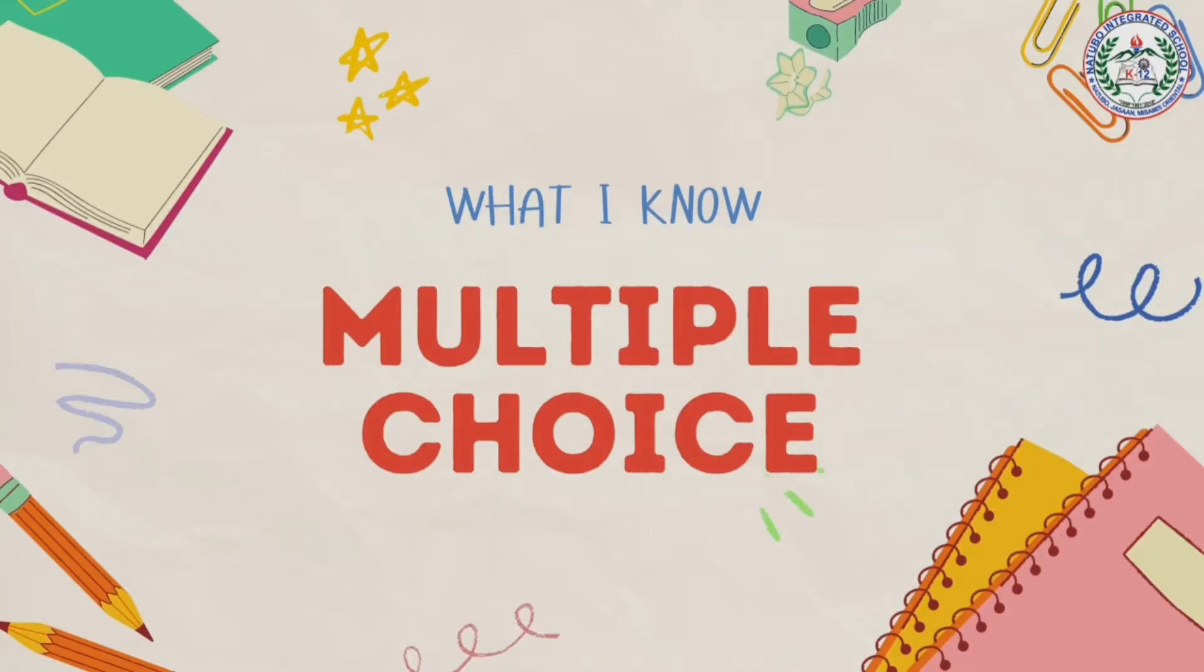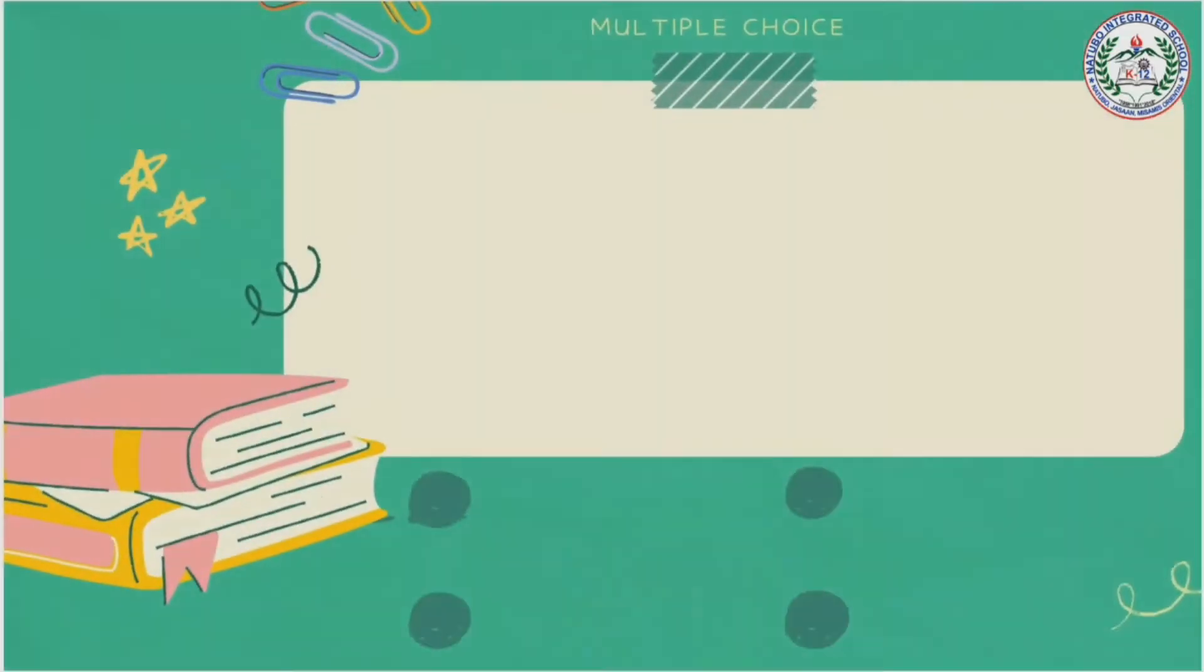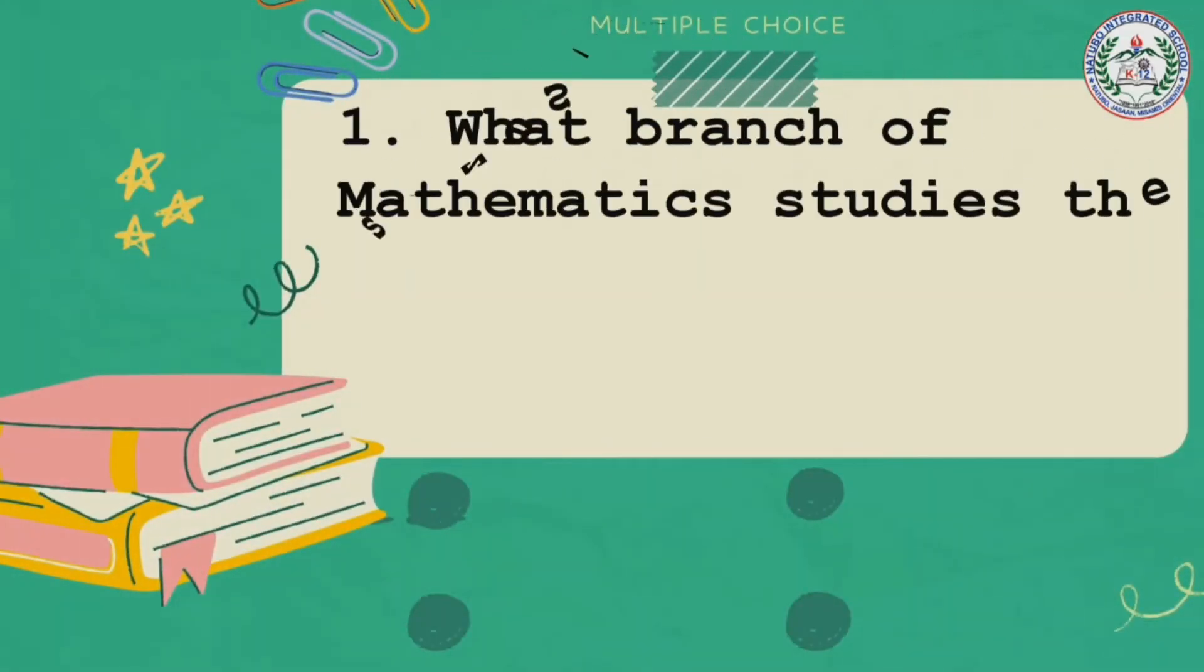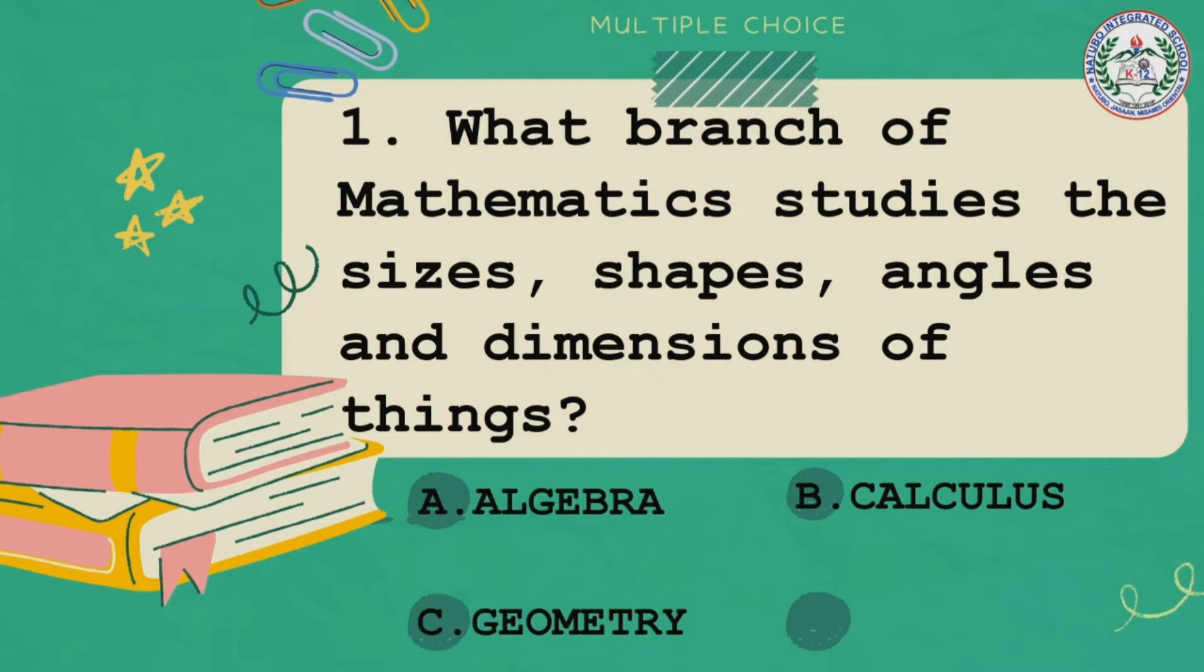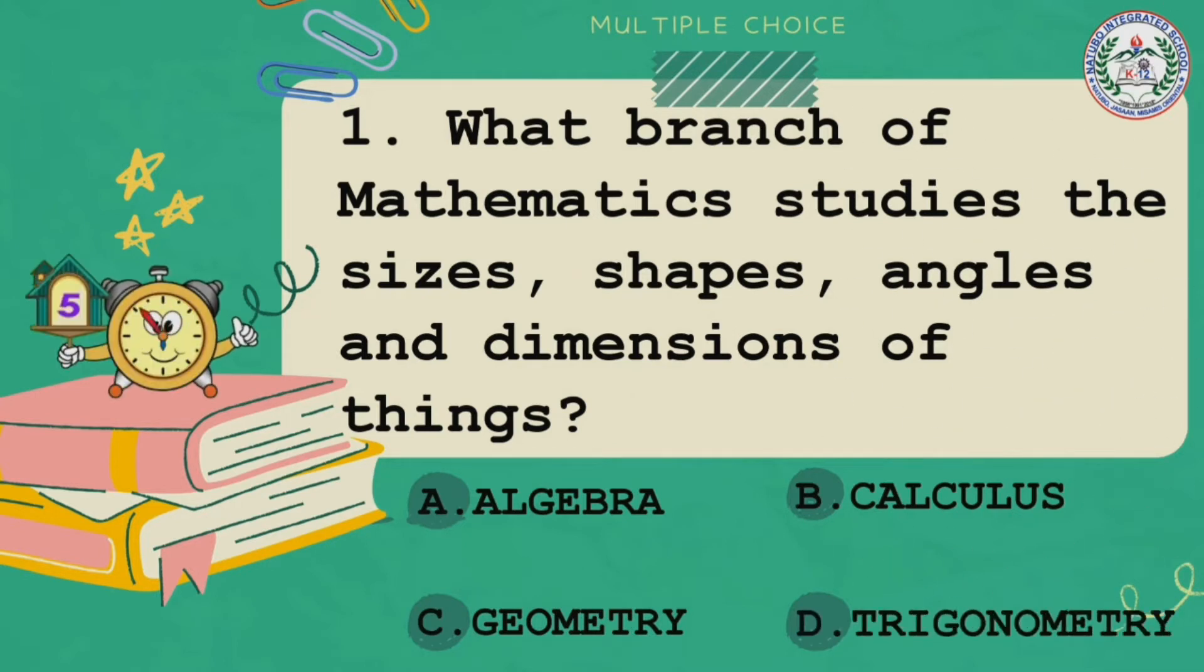To start, let us answer first the activity in what I know, which is found in your self-learning module. This is a multiple choice with five questions and you have to answer each question within five seconds. Let's start with question number one. What branch of mathematics studies the sizes, shapes, angles, and dimensions of things? Is it A algebra, B calculus, C geometry, or D trigonometry? Your timer starts now.